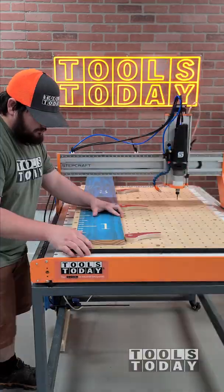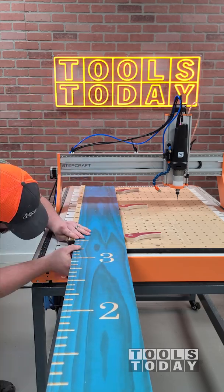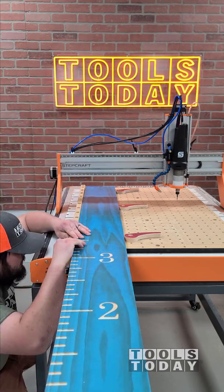After that's done, we move the CNC out of the way, unclamp, and then reclamp on that same location that we set our X and Y zero point before.